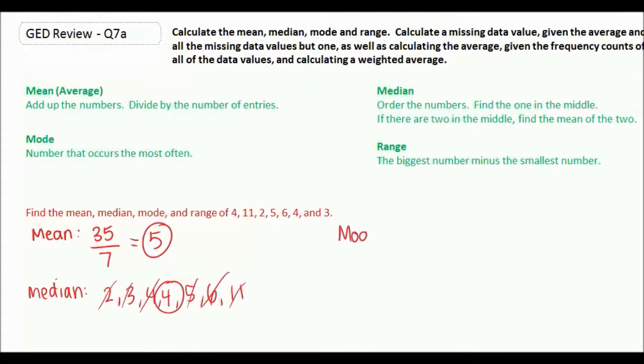The mode is the number that occurs the most often. Well, the number 4 occurs twice while everything else only appears once, which means that 4 is our mode.